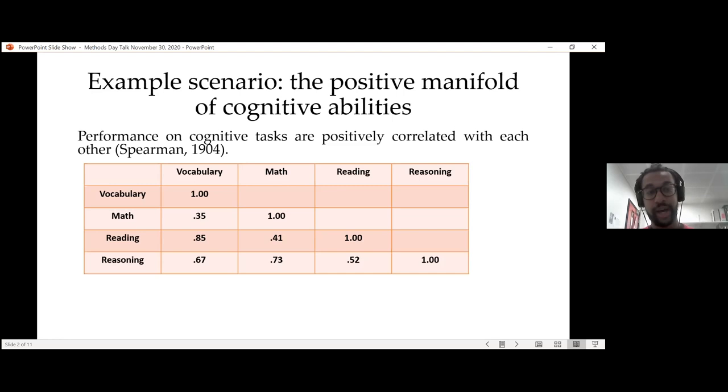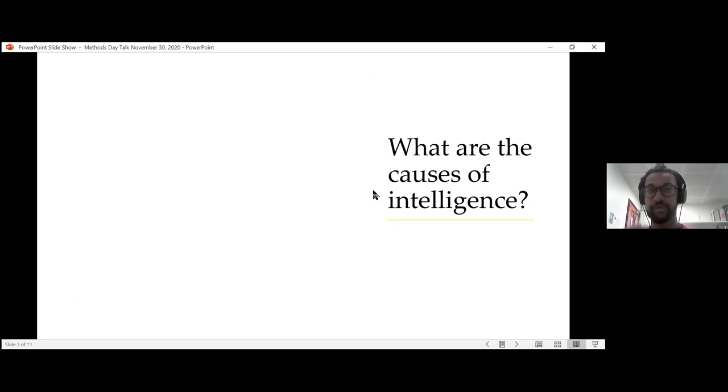However, now that you have this observation, these ubiquitous positive correlations, you still don't know exactly why everything is correlated. So you might want to try to find some type of mechanistic cause or causes for the emergence of this, for the observance of this positive manifold. So you might ask yourself, what are the causes of intelligence?